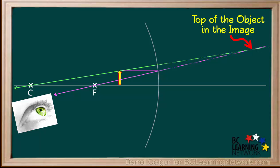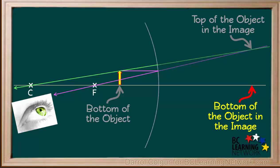So, this is where the top of the object will be in the image. The bottom of the object is sitting on the principal axis. So, the bottom of the object in the image will appear on the principal axis, directly underneath the top. Now that we know where the bottom and the top of our image is, we can draw it in.